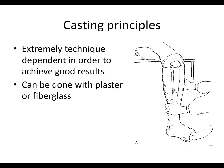Casting is very technique-dependent — some people do it well and some just don't, and you're not going to get good results if you don't. This cast ends right near the peroneal neck, so you have to pad this area really well because you have the common peroneal nerve coming right around there and you don't want to get a foot drop. Keep the foot at about 90 degrees — you don't want the foot in too much equinus. Keep the toes free and apply a nice molded cast. This can be done with plaster or fiberglass.